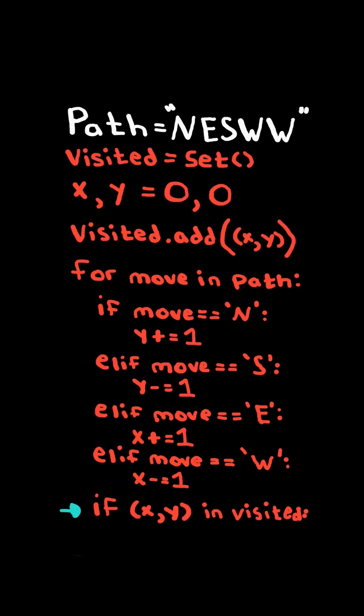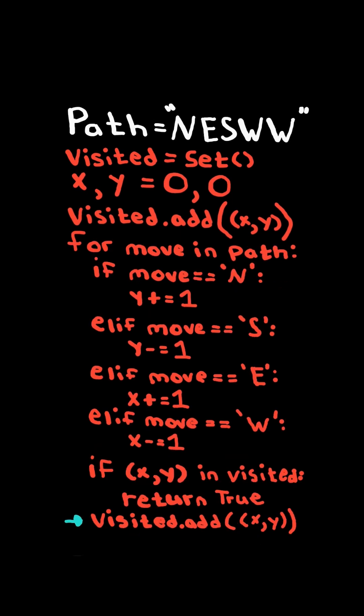If the updated point is already in the set, then we have crossed paths. Otherwise, we add the point to the set and continue. If we reach the end, then there was no path crossing.